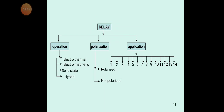Looking at the relay classification tree: relays are classified into three categories. First, depending on operation — four classifications. Second, depending on polarization — two classifications. Third, depending on application — fourteen types.